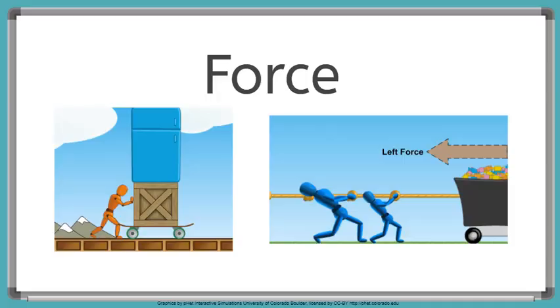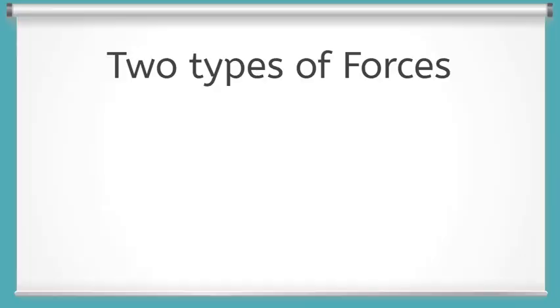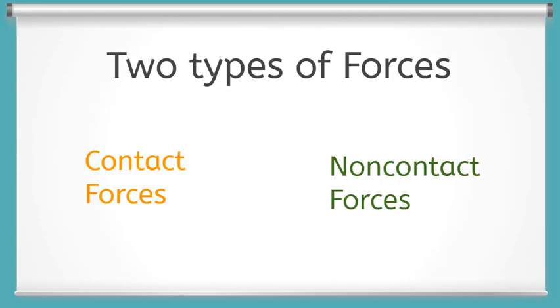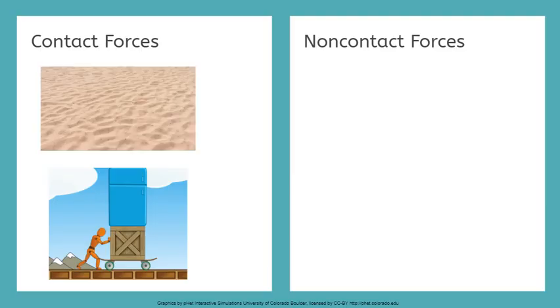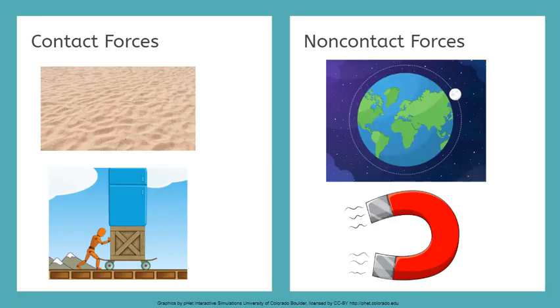Remember that a force is a push or a pull on an object. And there are two different types of forces. Do you remember what they are? That's right, contact forces and non-contact forces. Some examples of contact forces are friction or applied forces like a push or a pull. And this means two objects are physically touching each other to apply the force. Examples of non-contact forces are gravity and magnets. This means two objects are still interacting, but they're at a distance from each other, and they don't need to be physically touching to apply force.